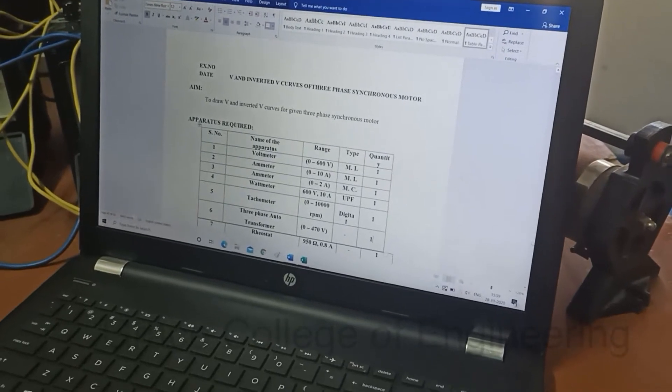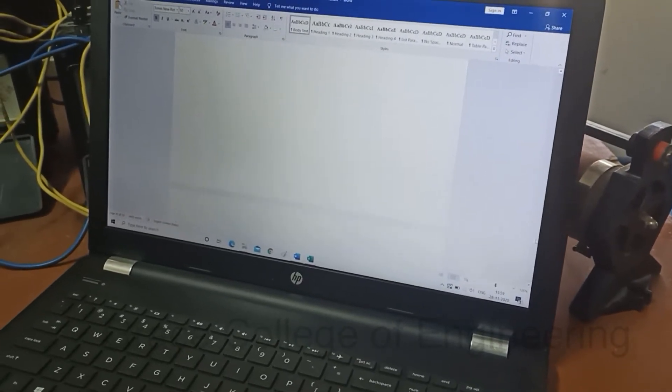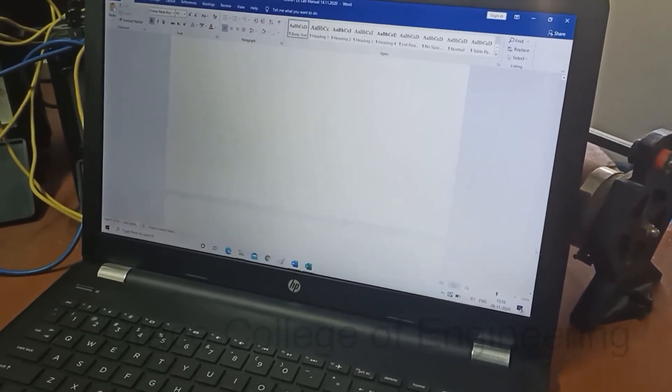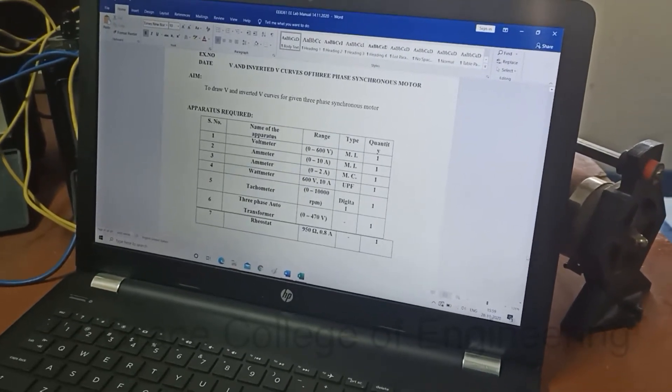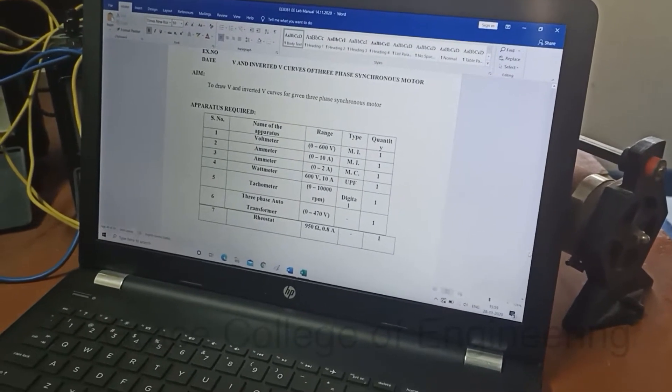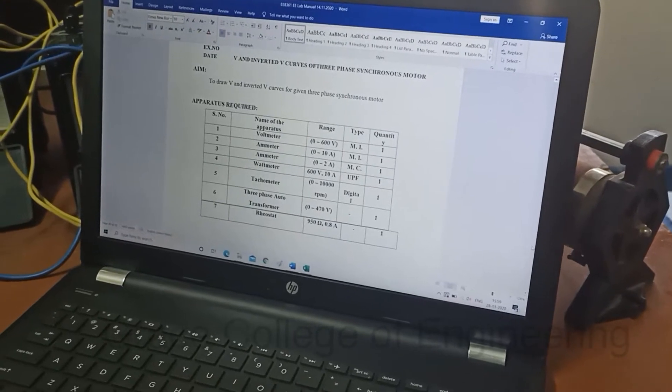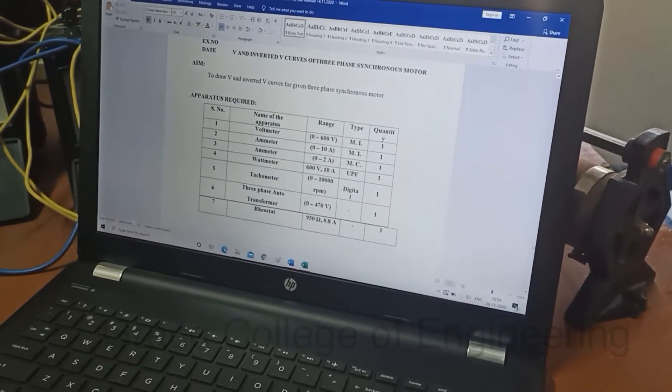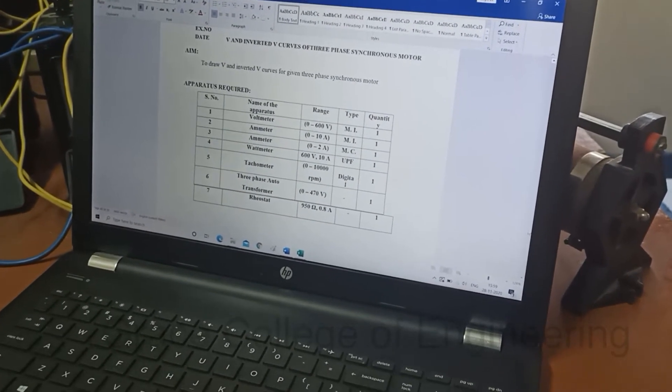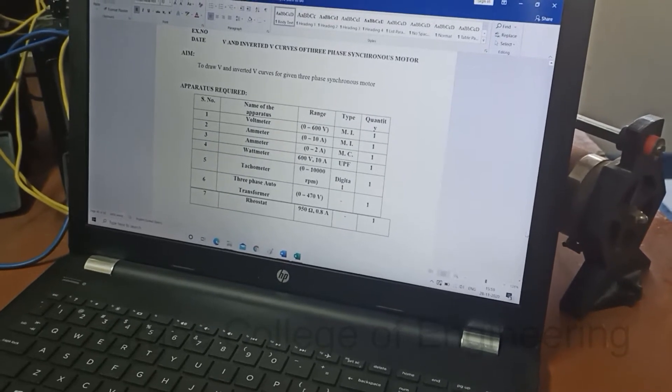The apparatus required are voltmeter, ammeter of 0 to 10 amps, ammeter of 0 to 2 amps, wattmeter rating of 600 volt 10 amps, tachometer, 3 phase auto transformer, and rheostat.